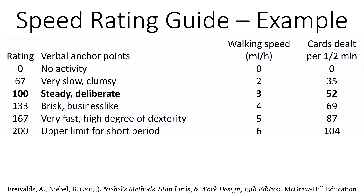It's a very simple guideline. Think about walking: normal walking speed is about three miles an hour. If someone is walking at three miles an hour, that is considered a normal, average speed.